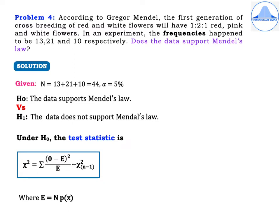Given: N equals 13 plus 21 plus 10, which is equal to 44. So the experiment gave 13 red flowers, 21 pink flowers, and 10 white flowers, giving N equal to 44. Since alpha is not mentioned in the problem, we take it as 5%. H₀: the data supports Mendel's law, versus H₁: the data does not support Mendel's law.